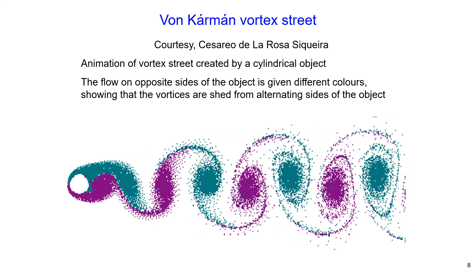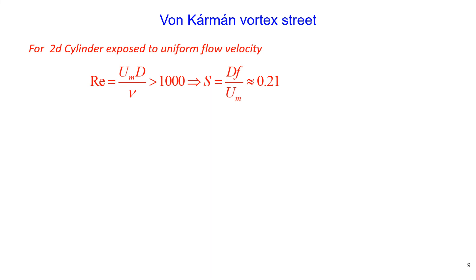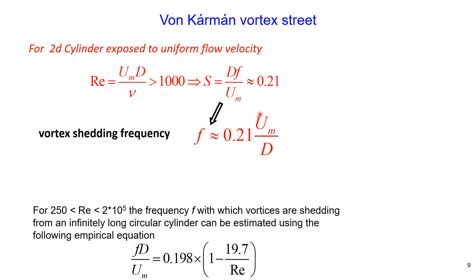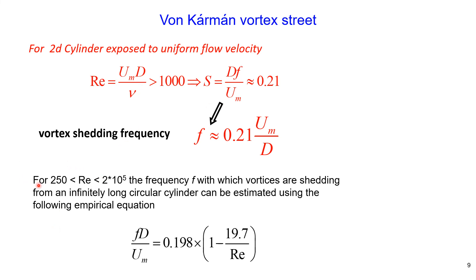Research has found that for a 2D cylinder exposed to uniform flow velocity, when the Reynolds number is greater than 1000, the Strouhal number becomes constant and is approximately equal to 0.21. From this, the vortex shedding frequency equals 0.21 multiplied by approach velocity divided by diameter. Research has also found that when the Reynolds number is in the range from 250 to 2×10⁵, the frequency can be found using an empirical equation.